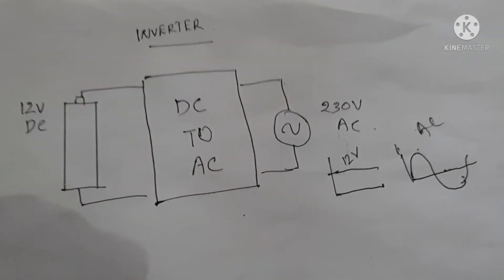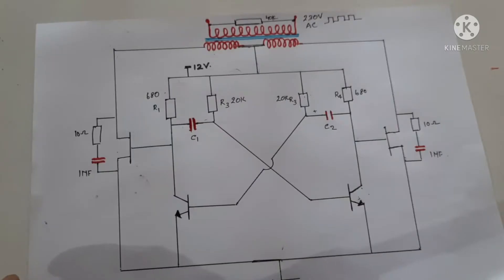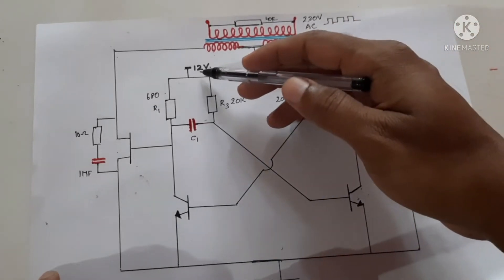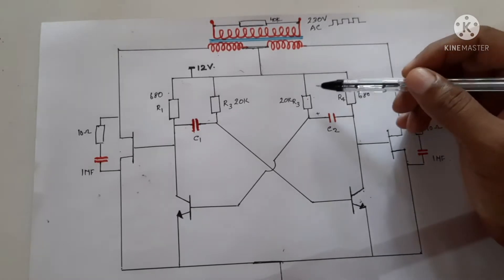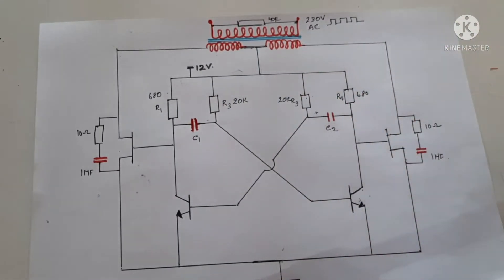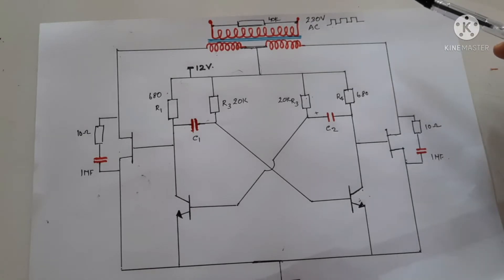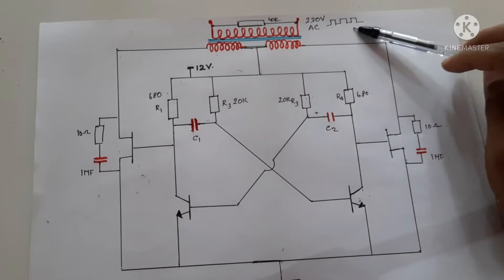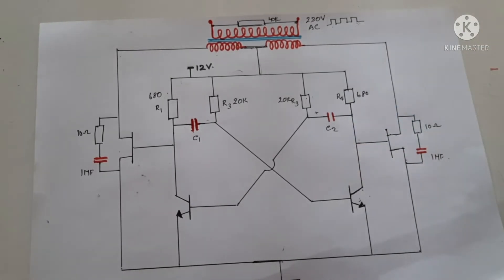A circuit that converts DC to AC is called an inverter. We will check a circuit which uses an astable multivibrator to generate an AC voltage from a DC battery. This inverter circuit works on the astable multivibrator mode, converting 12 volt DC into 230 volt AC. The output is not a sine wave but a square wave, so we cannot use it for every electronic circuit because it contains many harmonics and higher frequency signals.